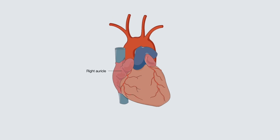Note here the right auricle, which overlies the right atrium, and the left auricle over the left atrium.